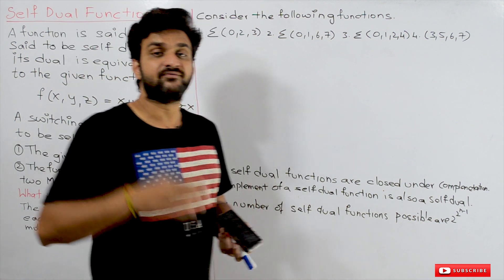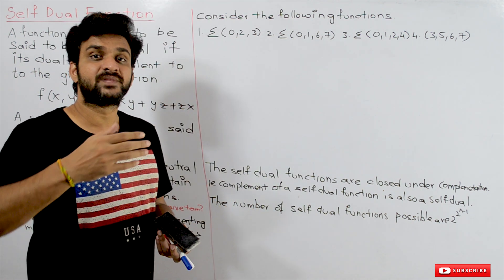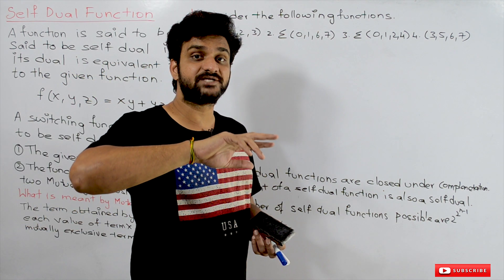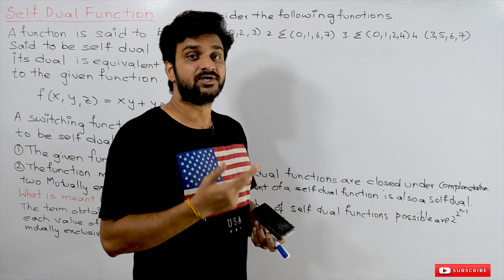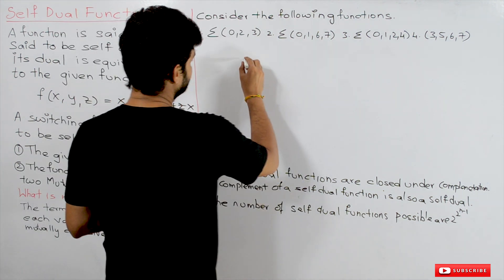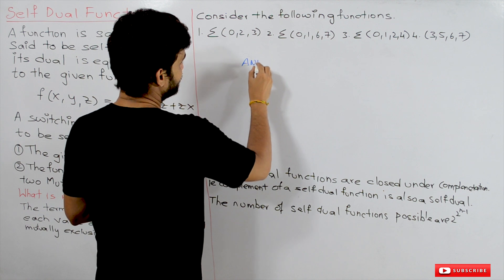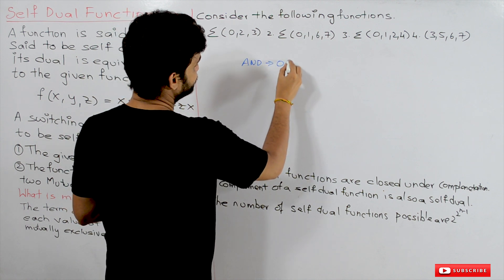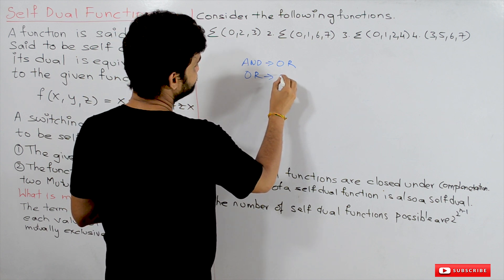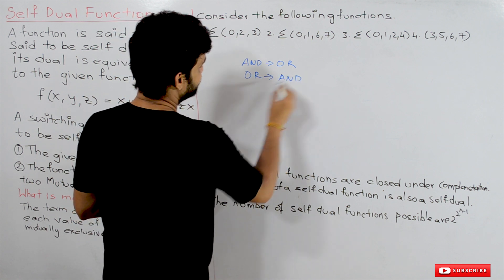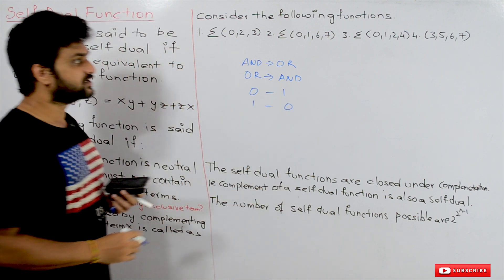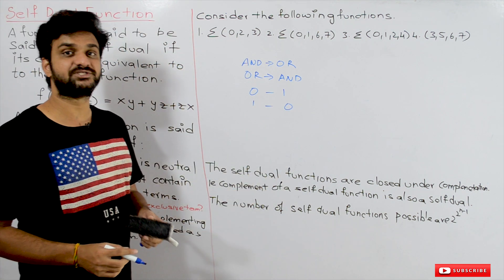So what is the principle of duality? Whenever a circuit is given a positive logic and that positive logic is changed to negative logic, what happens in the circuit is: the AND gate will be converted to OR, the OR will behave as an AND gate, 0 will be converted to 1, and 1 will be converted to 0. This is what we call the principle of duality.